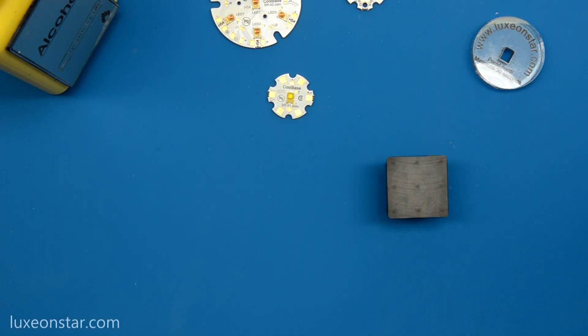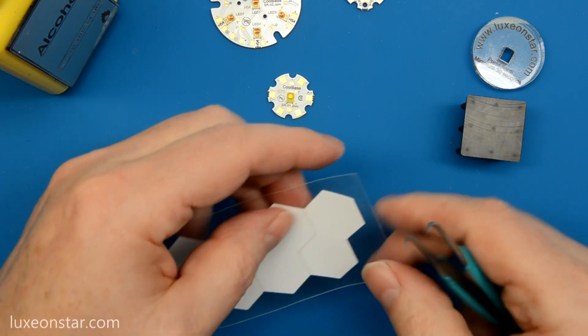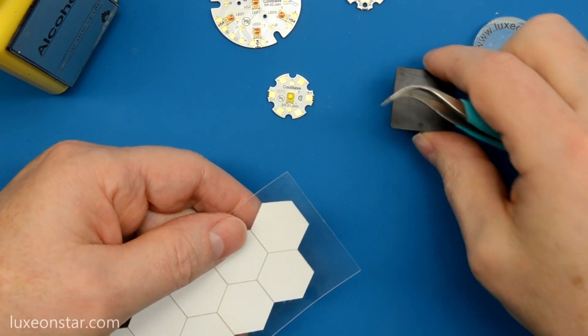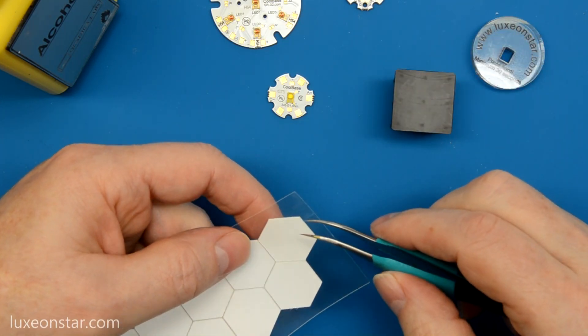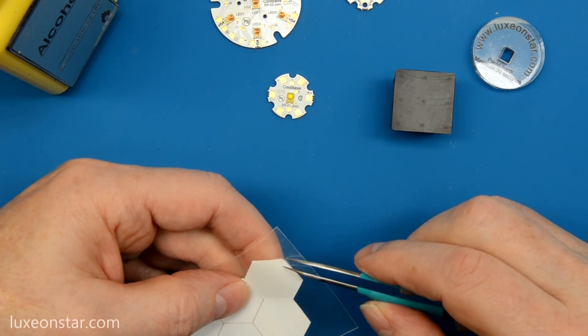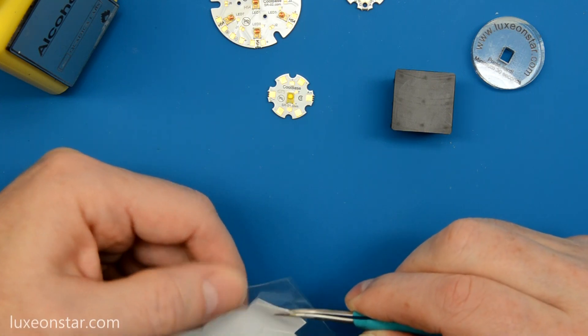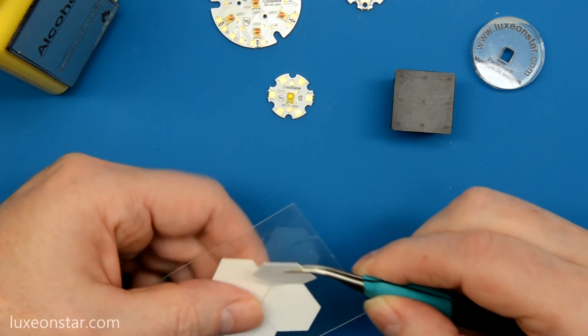Once cleaned, you're ready to peel off a thermal pad from the plastic backing. Best way to do that is with a pair of tweezers.